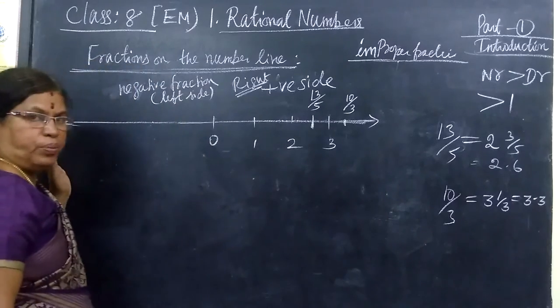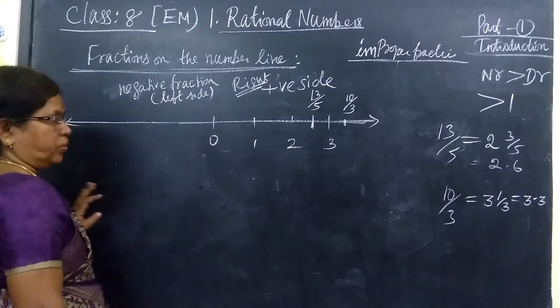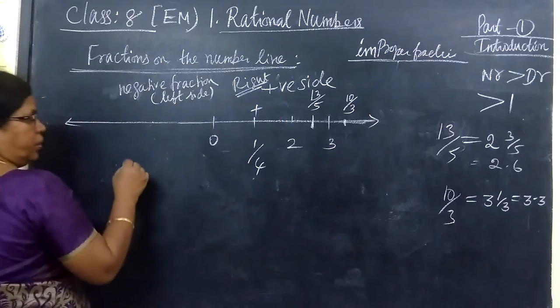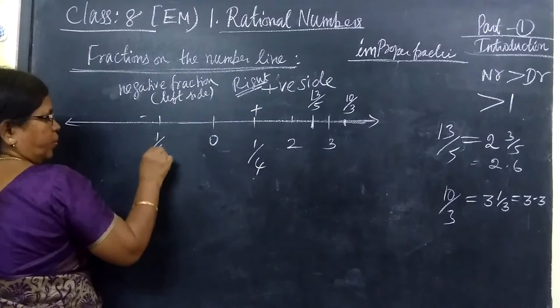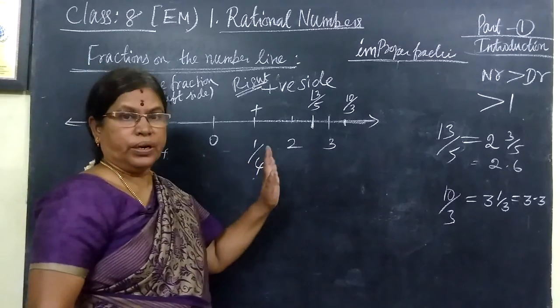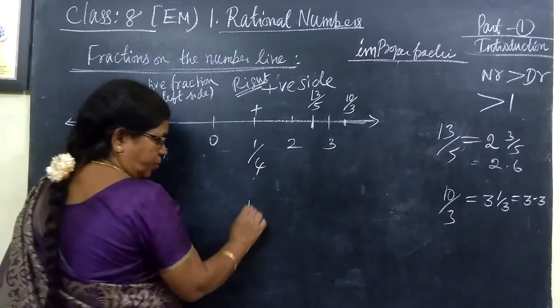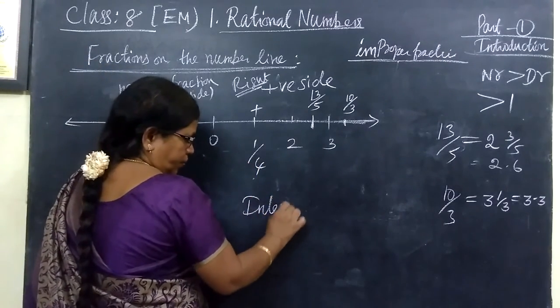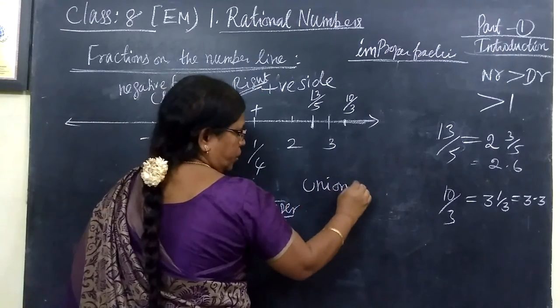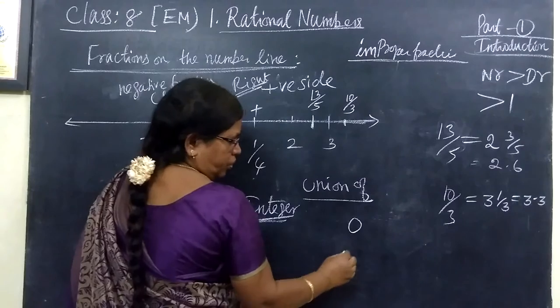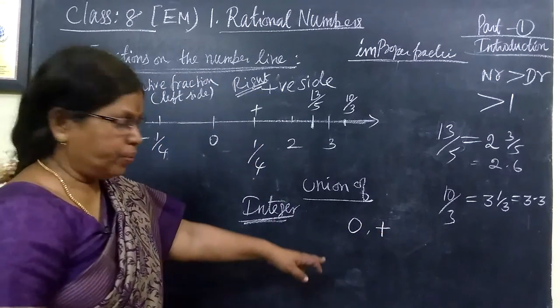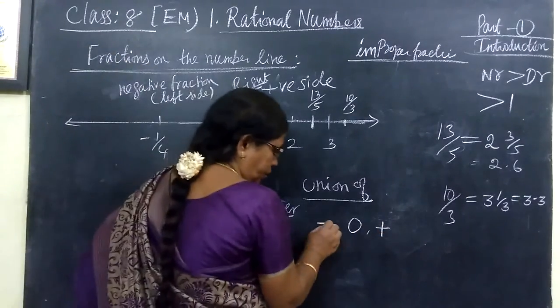So right side of zero means positive fraction. Left side of zero means you are getting negative fraction. Suppose you are getting plus 1 by 4 means here you can write minus 1 by 4. So this is extended to integer. Integer means what? Integer.